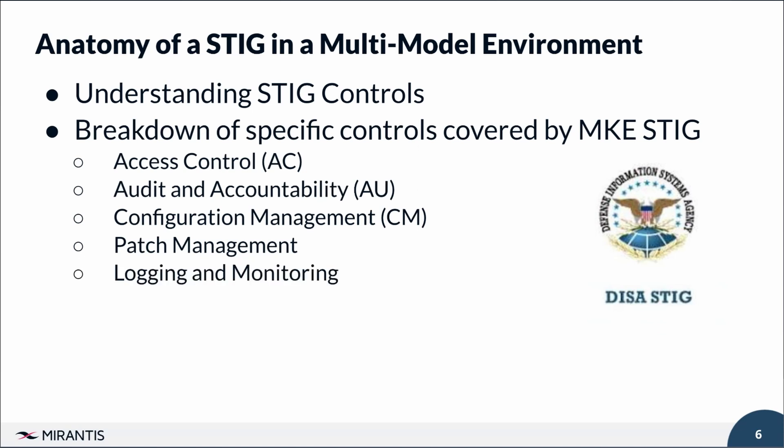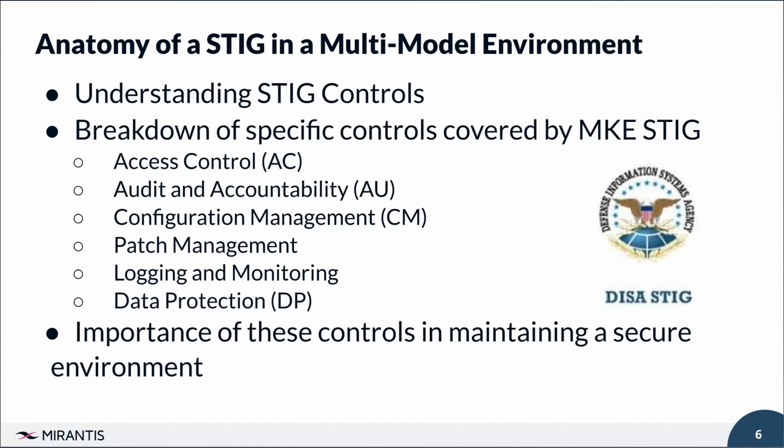Logging and Monitoring keeps comprehensive logs of system activities and enables continuous monitoring to detect and respond to security incidents. Data Protection (DP) secures data at rest and in transit using encryption, and implements access restrictions to protect sensitive information. By implementing all these controls, the MKE STIG ensures a holistic security posture for both Kubernetes and Swarm environments. Each control plays a critical role in maintaining the overall security and integrity of the environment.